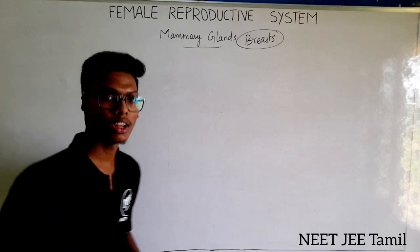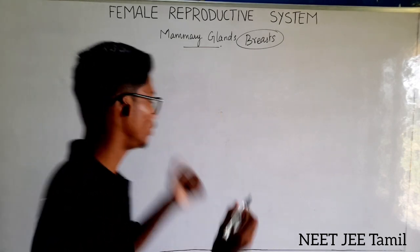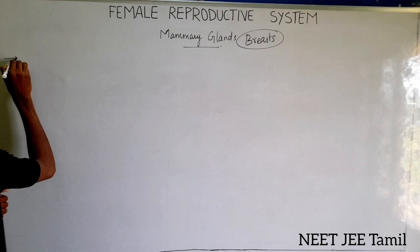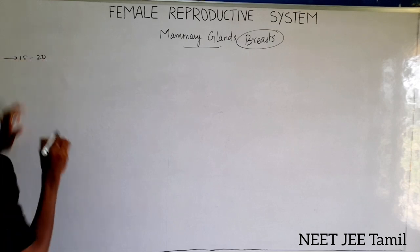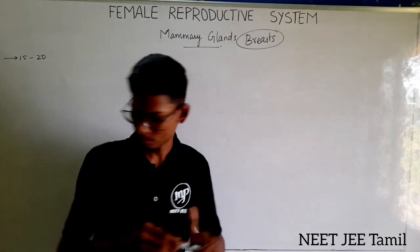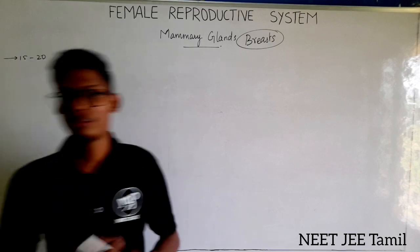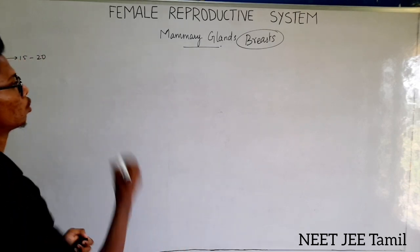The glandular tissue is divided into 15 to 20 mammary lobes.